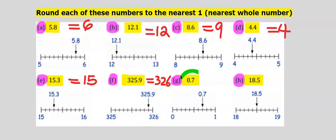Consider 0.7, which is between 0 and 1, and halfway between them. 0.7 is closer to 1 than to 0, and our answer is 1.